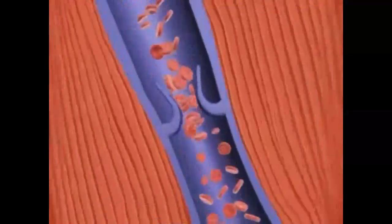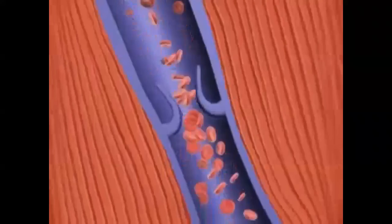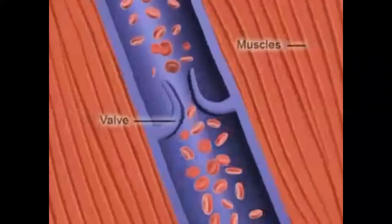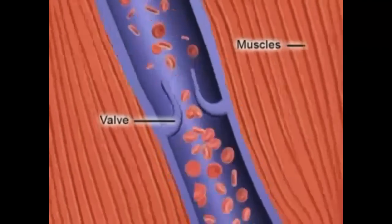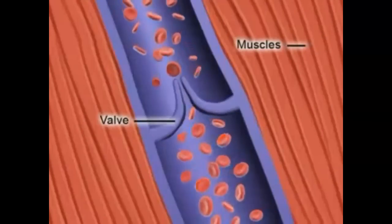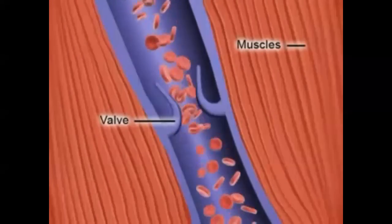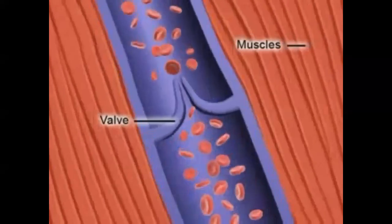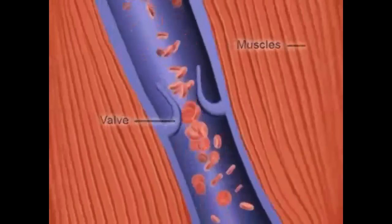Contractions of these muscles, when we move our leg and ankle, help to squeeze the blood back up towards the heart. The veins also have valves that prevent the blood from flowing back towards the feet.